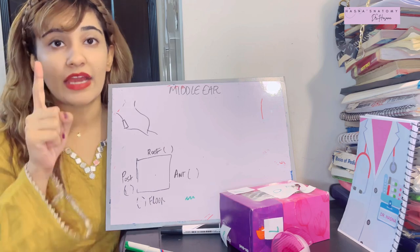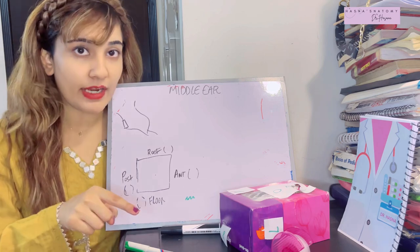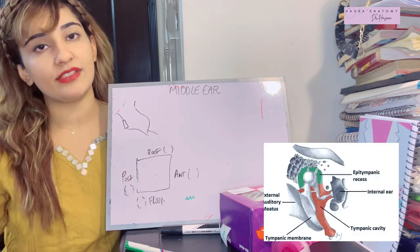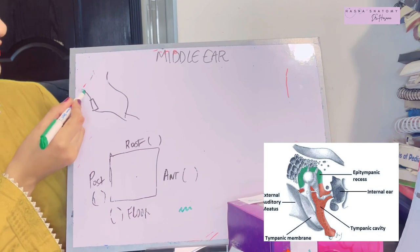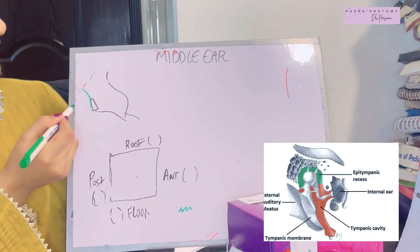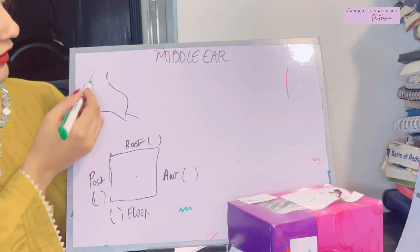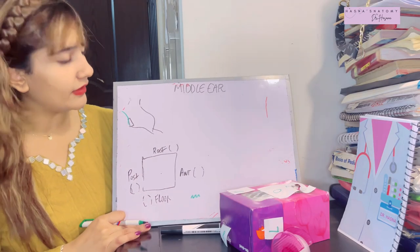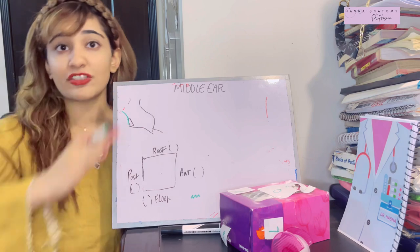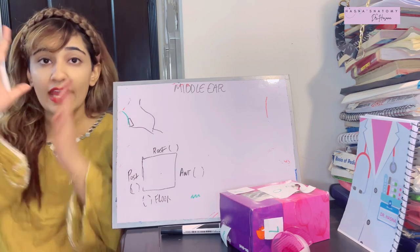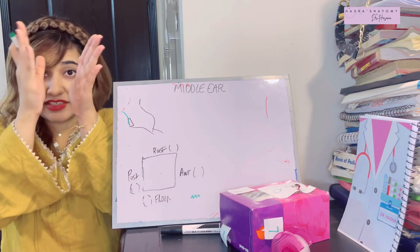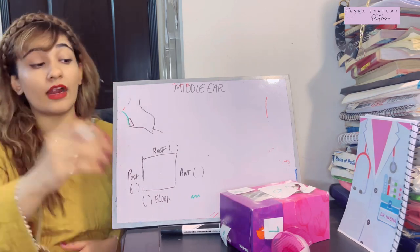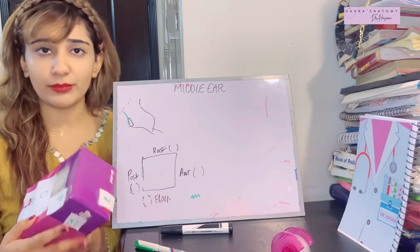The middle ear's other name is the tympanic cavity. The tympanic cavity is divided into two parts: the tympanic cavity proper and the epitympanic recess. The tympanic membrane lies on the lateral side, and the issue with the middle ear is that the medial and lateral walls are quite large — it's compressed from side to side.